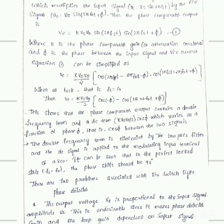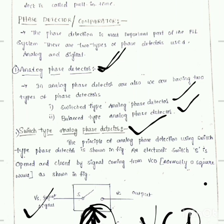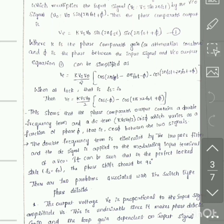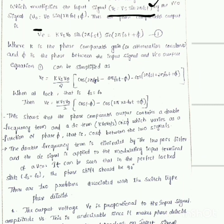Let us say the input signal applied here is Vs·sin(2πFct), and another signal applied at the VCO is V0·sin(2πF0t + π). The input signal at the switch is Vs·sin(2πFst) and the VCO signal is V0·sin(2πF0t + π). The switch type analog phase detector acts as a multiplier — it multiplies these two signals together.